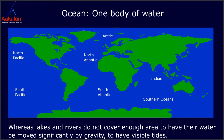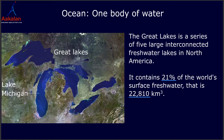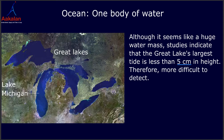Lakes and rivers do not cover enough area to have their water moved significantly by gravity, or in other words, to have visible tides. For example, the Great Lakes is a series of five large interconnected freshwater lakes in North America. It contains 21% of the world's surface freshwater, that is 22,810 km³. Although it seems like a huge water mass, studies indicate that the Great Lakes' largest tide is less than 5 cm in height, therefore making it more difficult to detect.